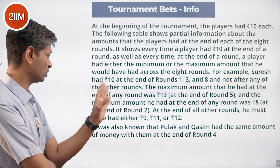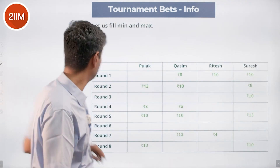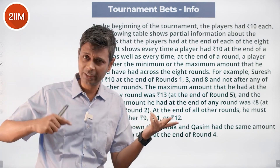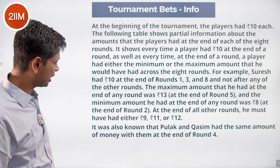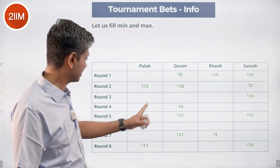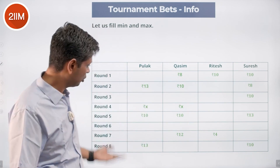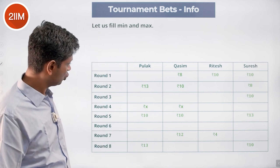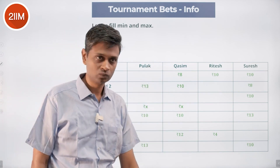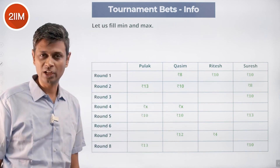And the minimum Suresh had was 8 at the end of round eight — so we have: 10, 10, 10, 8, 13. Since 13 is the maximum and 8 is the minimum, at the end of all other rounds he must have had either 9, 11 or 12. It was also known that Pulak and Kasim had the same amount X at the end of round four. We know X is not 10 (or we'd have that info), not 8 (minimum here), not 12 (that's the maximum for Pulak), so X must be 9 or 11.